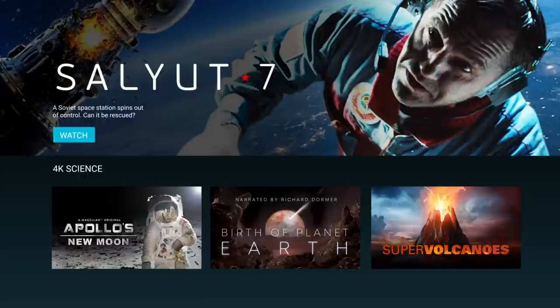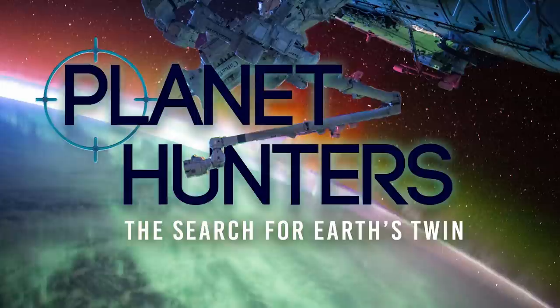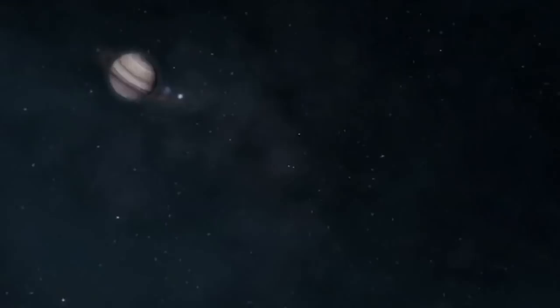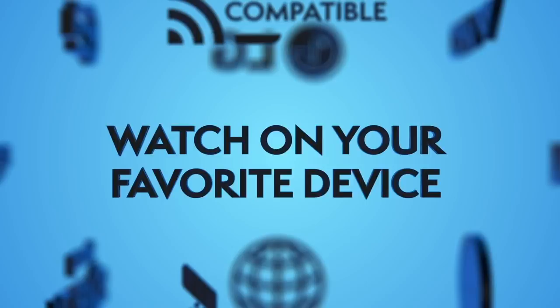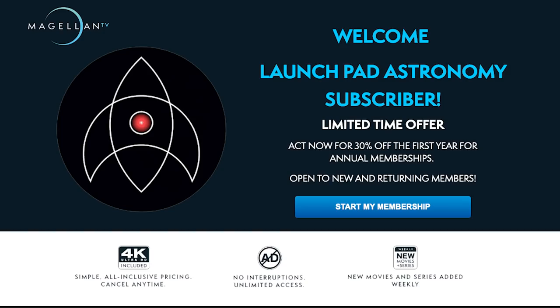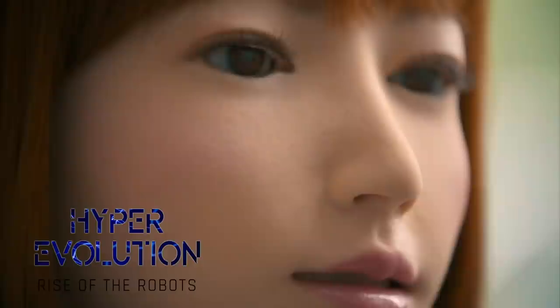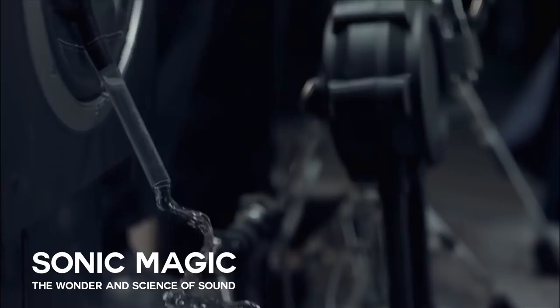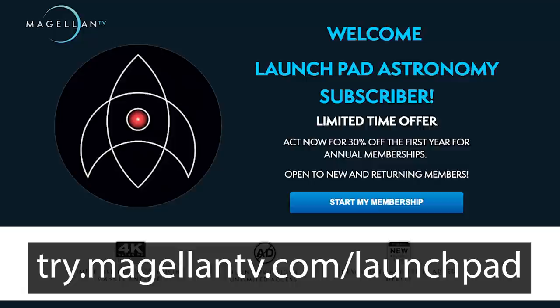But first, I would like to thank MagellanTV, who are very kindly sponsoring today's video. Magellan curates award-winning documentaries on history, art, nature, and of course, space and science. For example, Planet Hunters, the Search for Earth's Twin, talks about the search for a planet just like ours, with the right size, the right orbit around its star, and temperatures that are neither too hot nor too cold to support life. New programs are added weekly and can be watched on Roku, Amazon Fire TV, Apple TV, Google Play, and iOS. And now, Magellan is offering my viewers 30% off an annual membership. Even better, this offer is available for both new and returning members alike. Simply click on the link in the description to claim your discounted annual membership today.